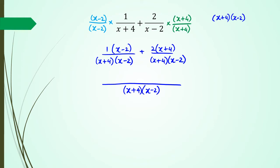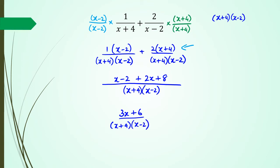Now I need to expand the brackets in the numerator. x minus 2 times 1 is just x minus 2, plus 2 times (x plus 4) is 2x plus 8. Simplifying: 2x plus x equals 3x, and 8 minus 2 equals 6. So I can rewrite the two top fractions as one fraction: (3x plus 6) over (x plus 4)(x minus 2).